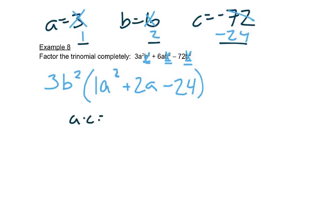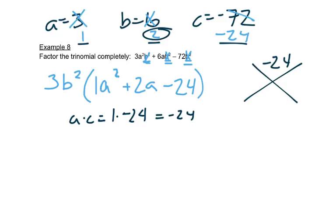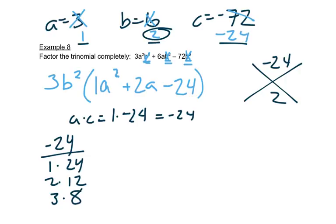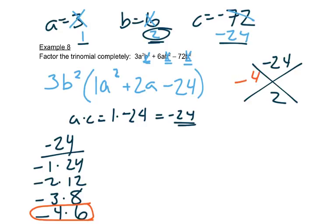We can take A times C, and we get 1 times negative 24, which is negative 24. So we're trying to multiply to get negative 24 and add to get 2. We look at our negative 24: we can have 1 times 24, 2 times 12, 3 times 8, 4 times 6. Since one number needs to be negative and our B is positive, we want the bigger number to be positive. So we look for something that adds to get positive 2, and that would be negative 4 and positive 6.